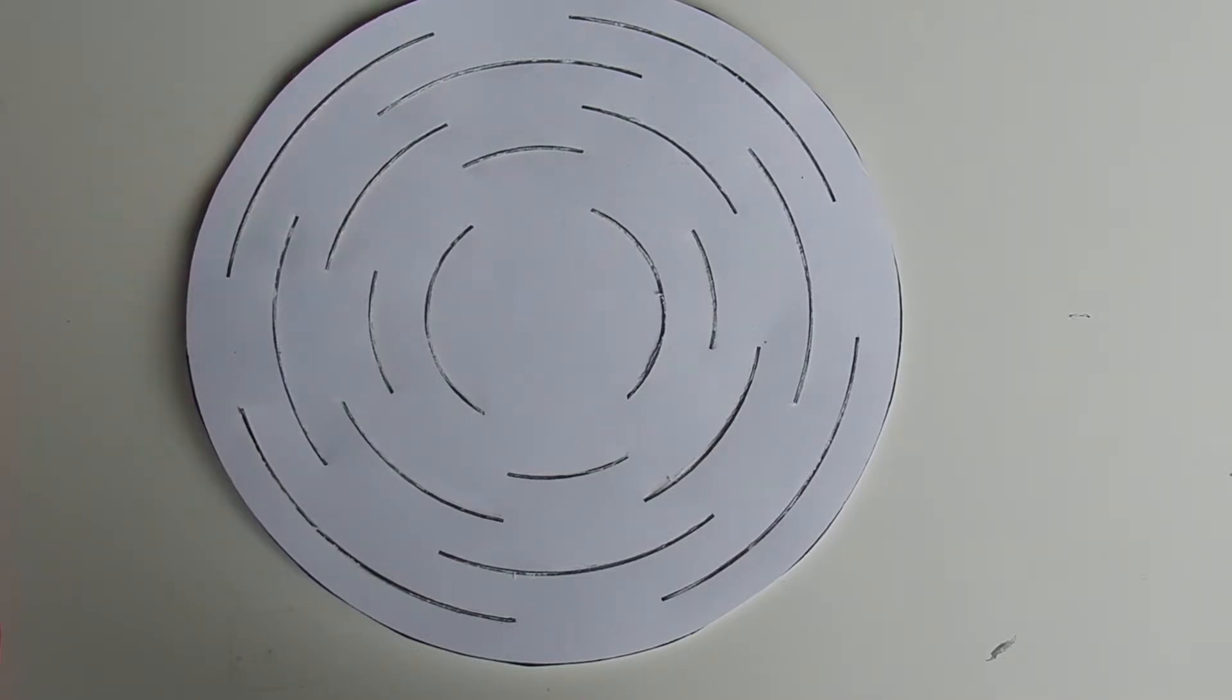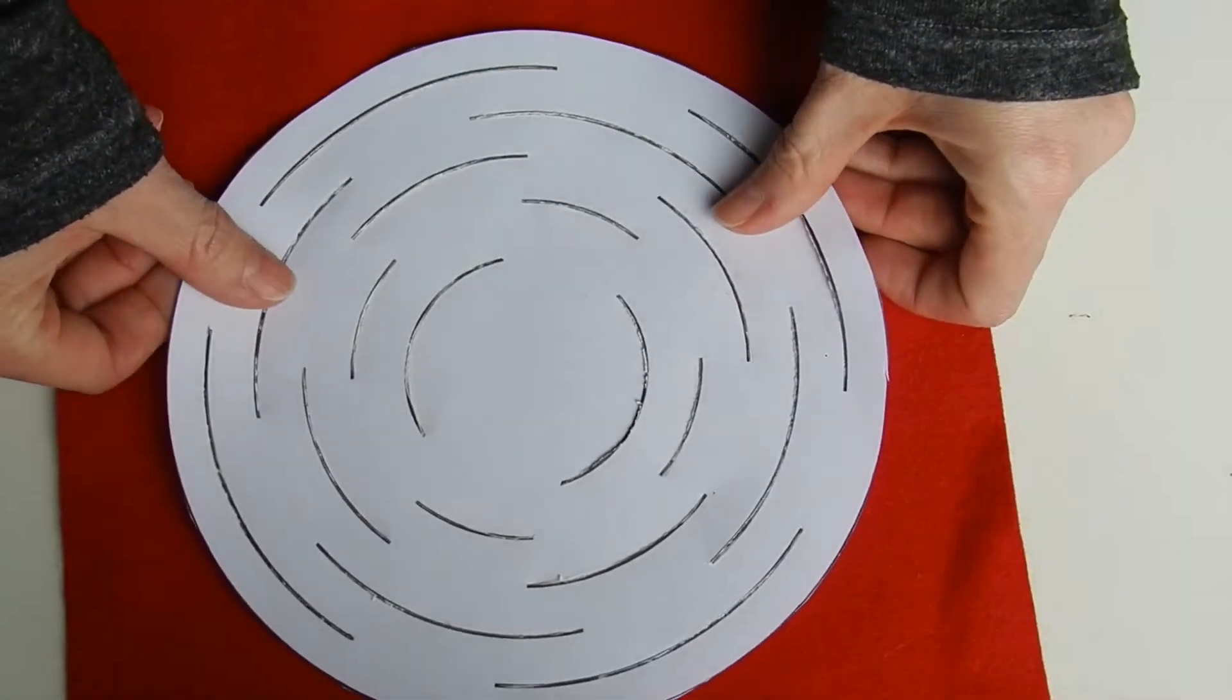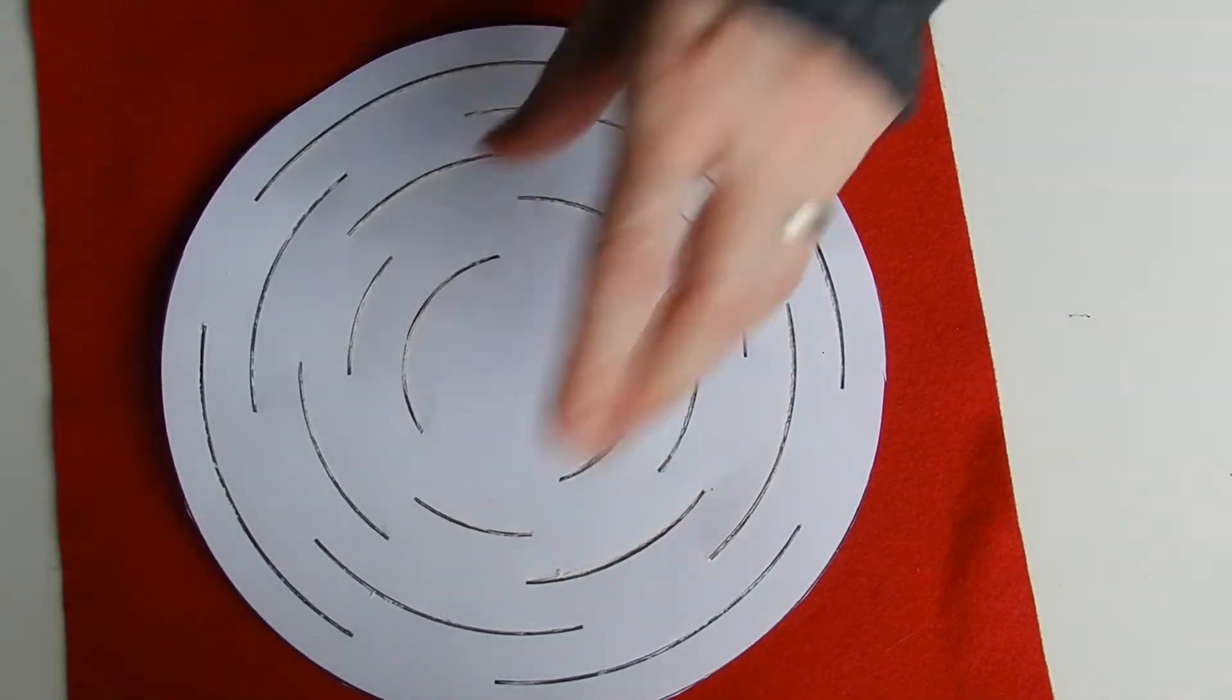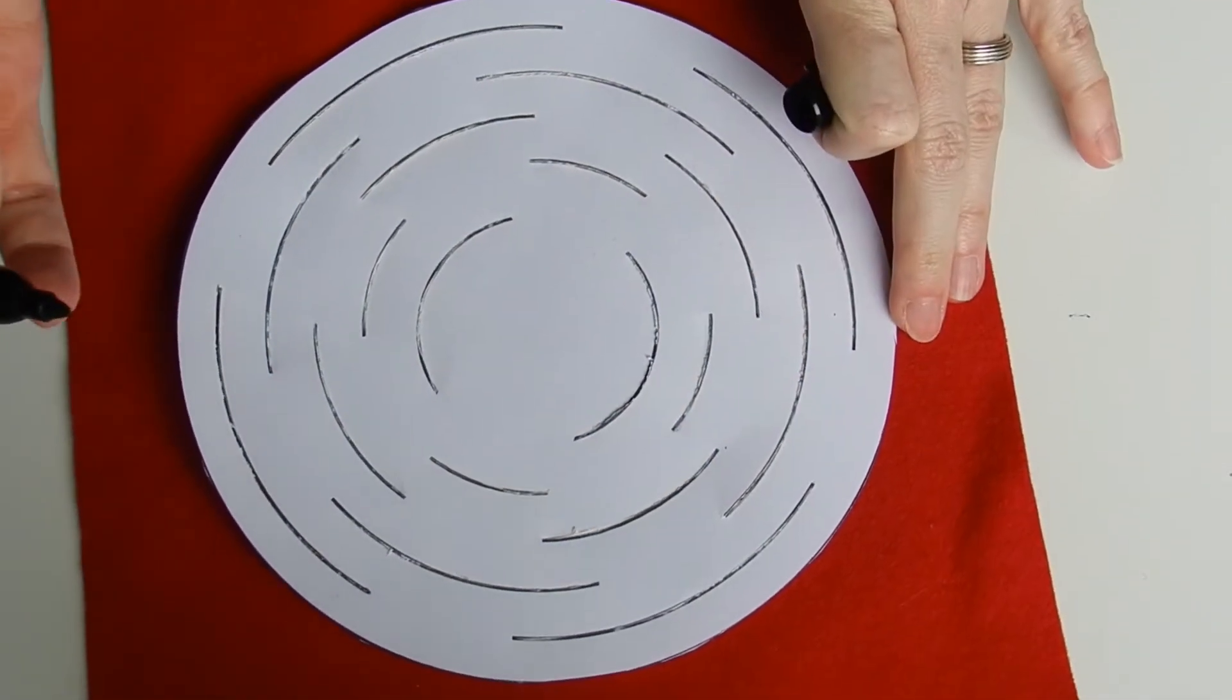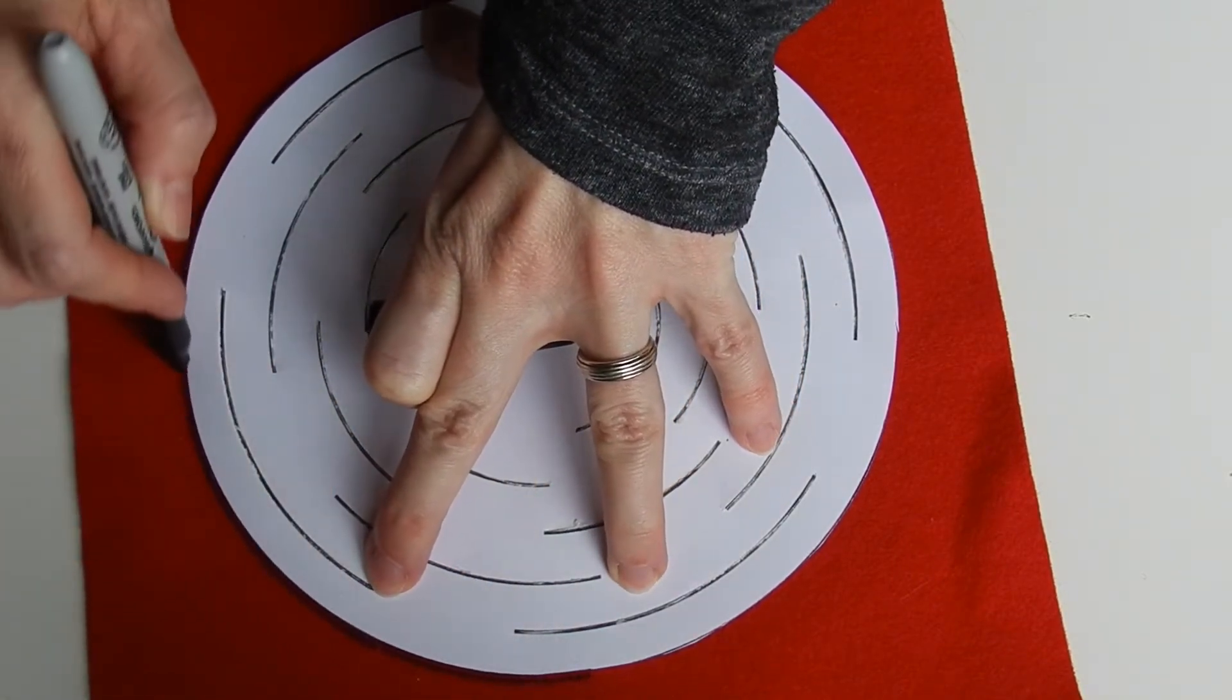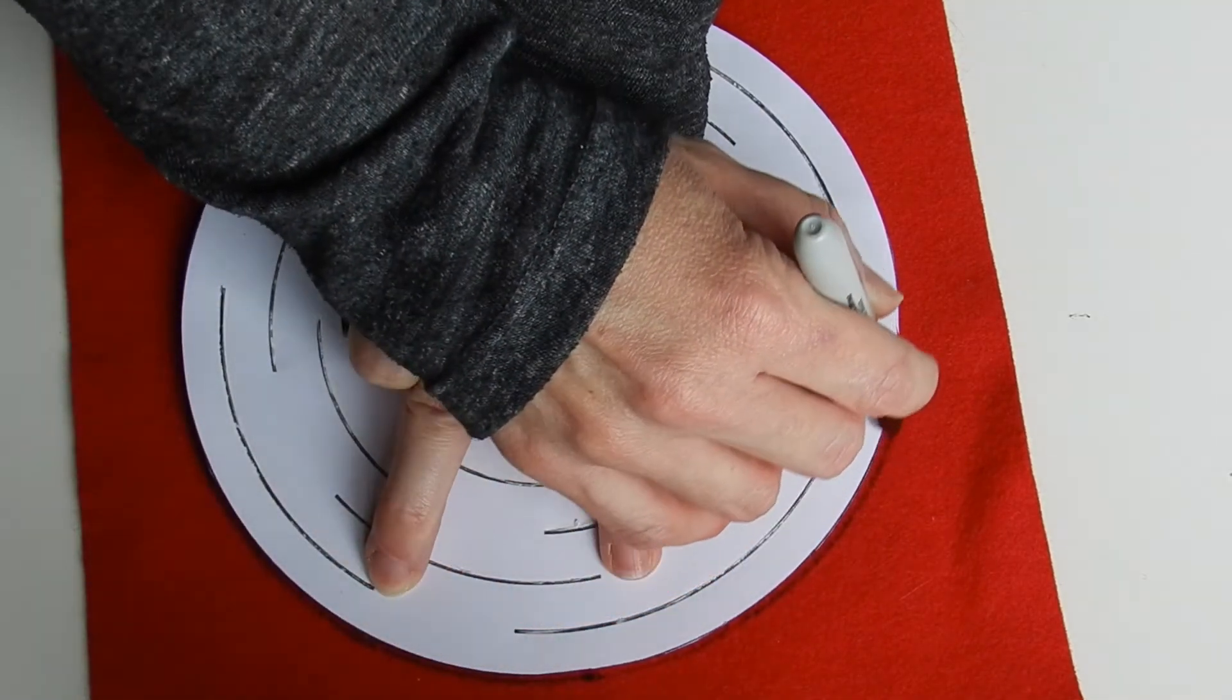Then you're going to lay the felt down underneath the pattern. I would also recommend putting a cutting board or something another piece of material underneath so that when you cut you don't cut through to your parents table or your desk. I like to trace around the outside of my pattern before I do any of the cutting with my sharpie.